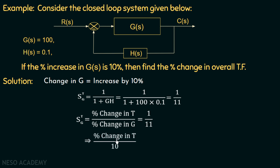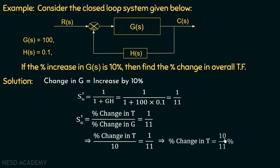So we will have: percentage change in T over 10 equals 1 over 11. Transposing 10 to the right-hand side, we get the percentage change in T equal to 10/11 percent, which is equal to 0.909%. So we have calculated the percentage change in the overall transfer function, which is 0.909%.